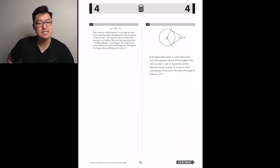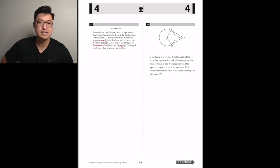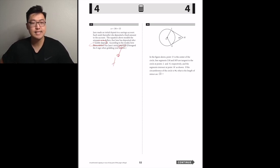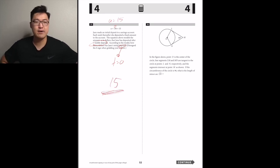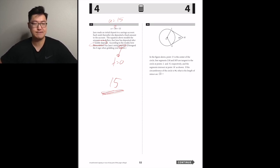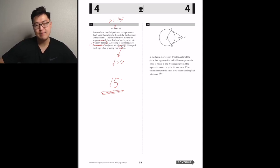Jane made an initial deposit to a savings account and each week thereafter deposited a fixed amount. The equation models the amount A in dollars after t weekly deposits. How many dollars was Jane's initial deposit? That's when t = 0, and the answer is 15.